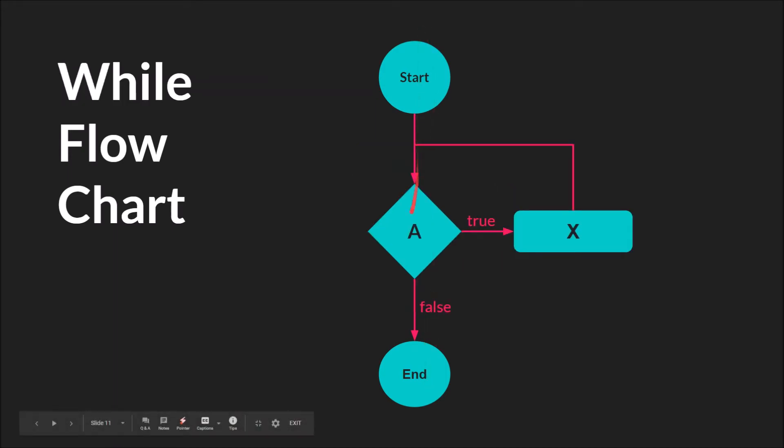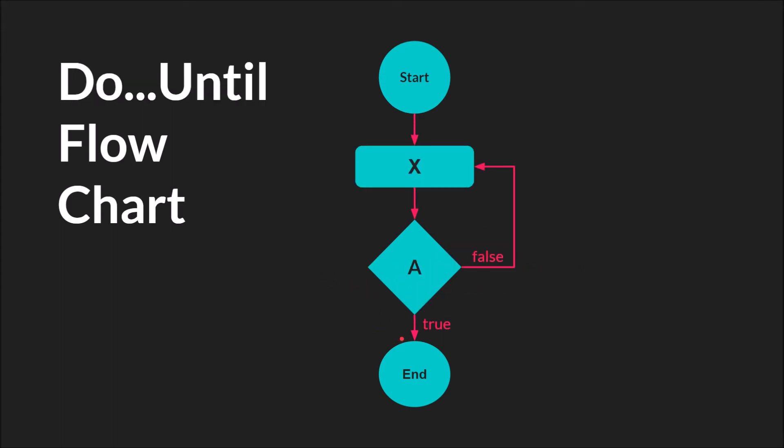With the while loop, the condition is checked first, and if it is true, the code inside the loop will run. If it is false, the code will exit. With the do loop, the code runs first, and then if the condition is false, the code will repeat. If it is true, it will break out.